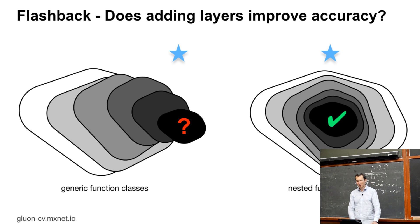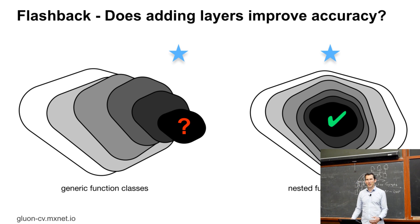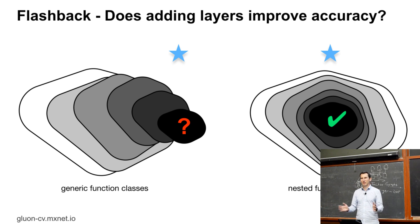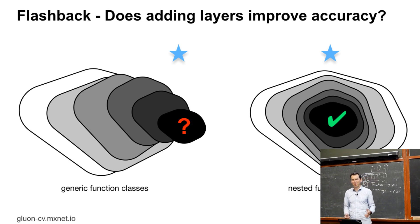So remember in ResNets — residual networks — we try to address the issue that if I add layers, does it actually get more accurate? One of the nice things would be if, as I add more layers, my function class becomes richer and contains the original function class as a subset. Because if it's just larger but different, it may be too different and I can't really use it very much.